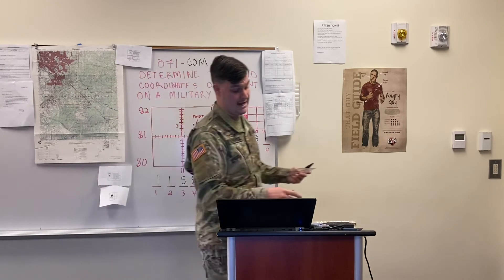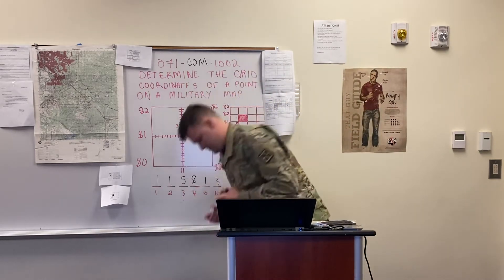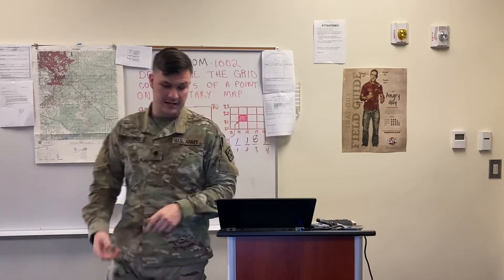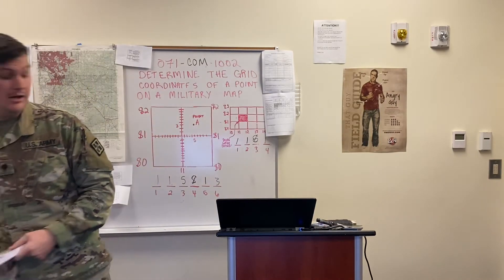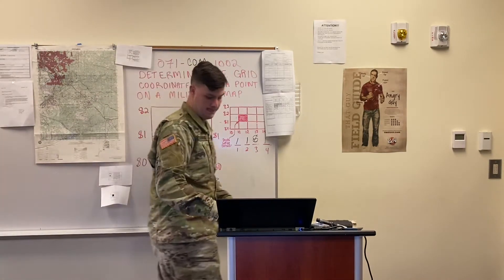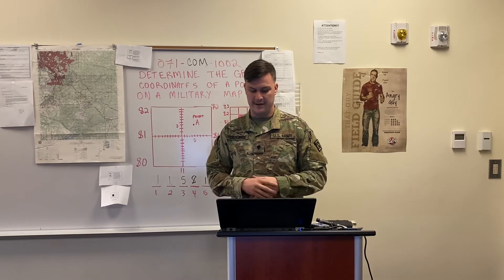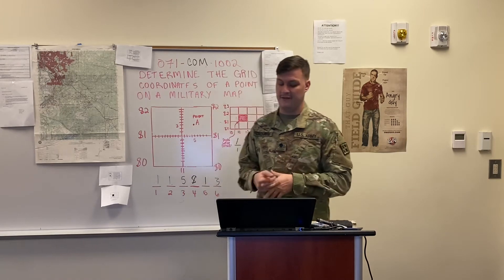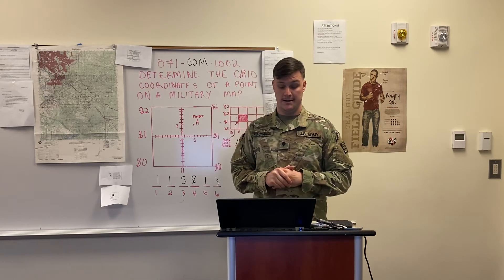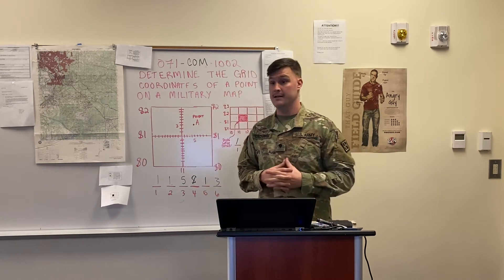Now I'm going to give you guys time to practice to learn the standard. I'll hand out your Warrior Skills Level 1 book along with a protractor and some examples. Using the map I just handed out to everyone, find the four-digit grid coordinate of the red dot, then find the six-digit grid coordinate of the red dot.